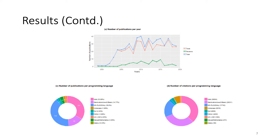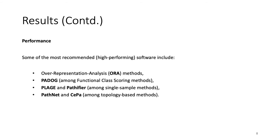Our study also establishes that software written in the R programming language and web-based applications find the maximum usage. We show that the over-representation analysis methods are higher in performance, and among functional class scoring methods are PEDOC, PLAGE, and Pathifier among single sample methods, and PathNet and SEPA among topology-based methods.